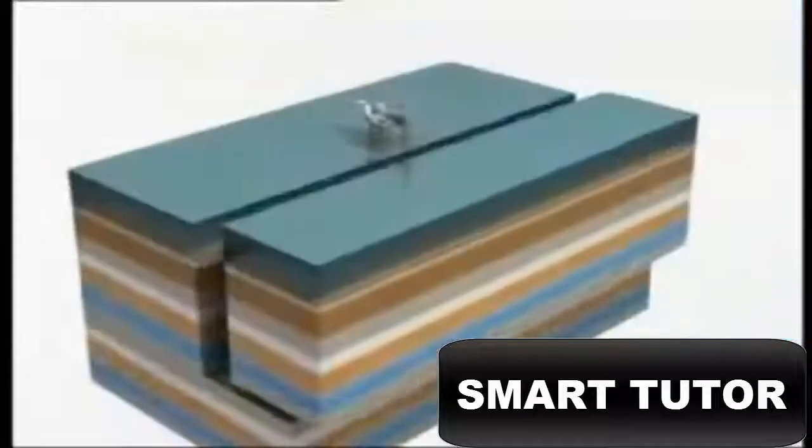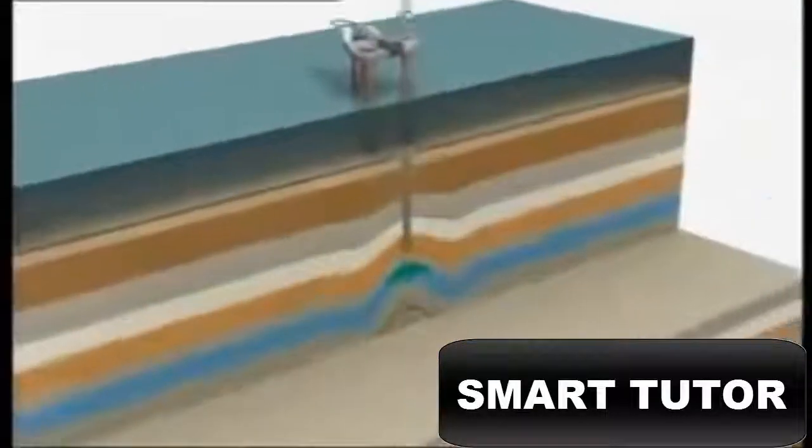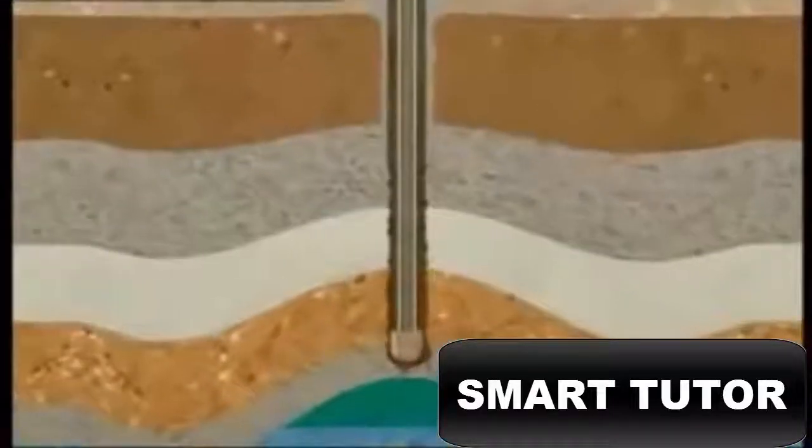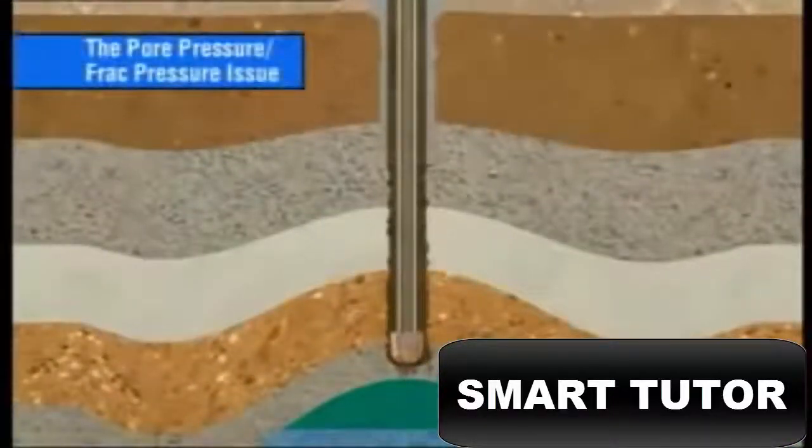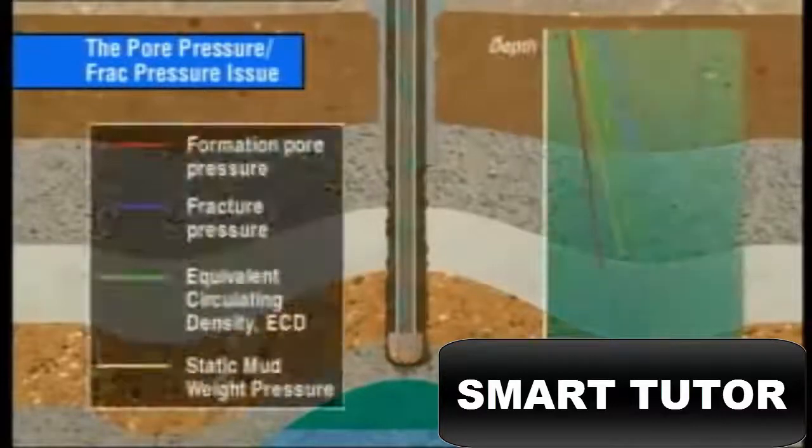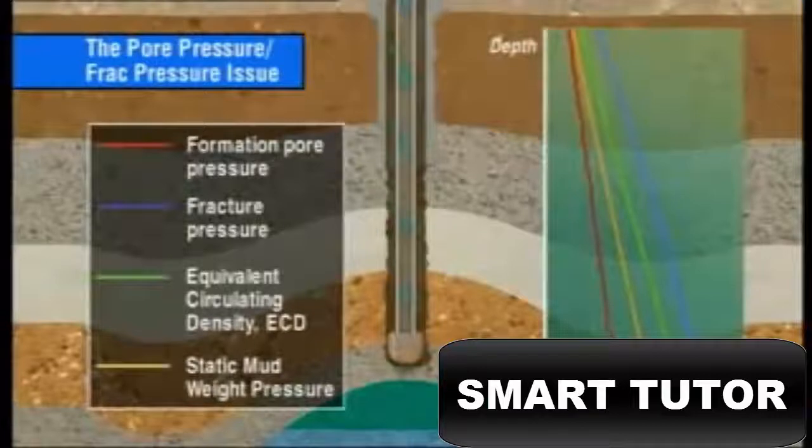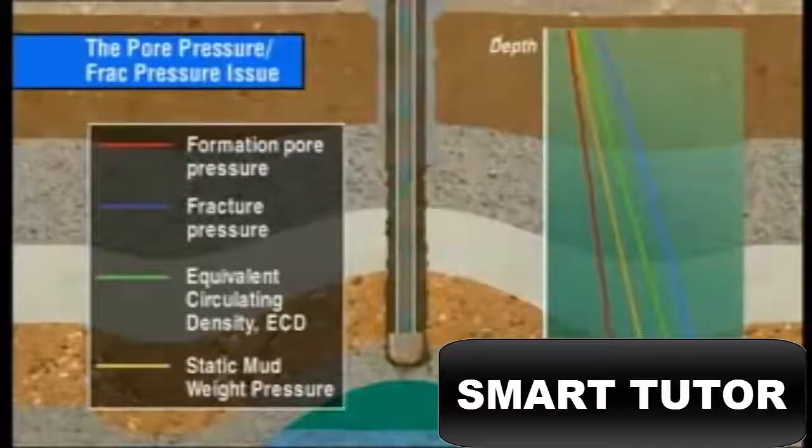Using the CCS brings many benefits and advantages. One of them is to drill formations that have a narrow pore pressure-frac pressure window. On this graph of depth versus pressure in the well pore, the red line represents the formation pore pressure, the blue line the fracture pressure. The green line is the equivalent circulating density, or ECD, of the circulating drilling fluid, and shows the steady state conditions when drilling ahead.